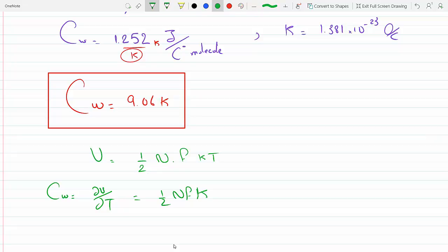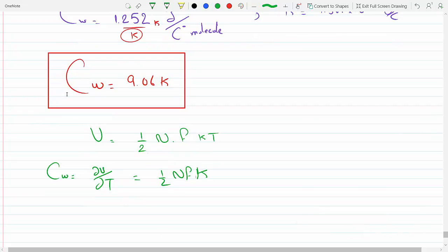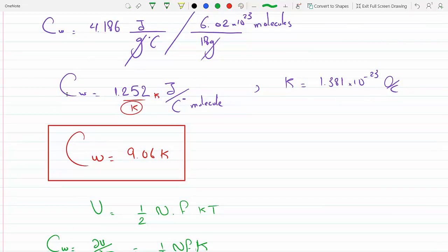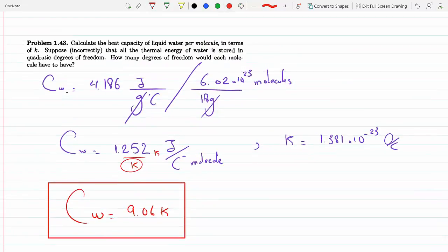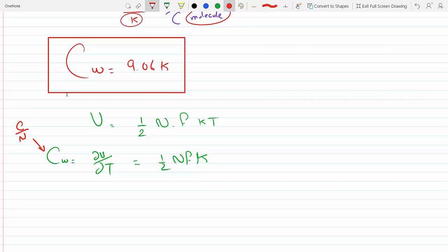One thing before I go further: notice when I calculated C_w, I already have over N contained in this because this is technically C over N. I divided by N—I divided by the molecules over 18 grams, so that gave me C per molecule. In other words, my N is already contained in this, so I could eliminate my N here. It's already contained in C_w. It's like dividing both sides by N and then replacing C over N by C_w, which I got up there to be 9.06. So moving on, I could calculate my degrees of freedom from this: 2C_w equals FK.